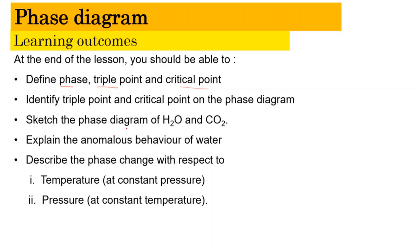We're going to sketch the phase diagram of water as well as carbon dioxide, and explain the anomalous behavior of water on the phase diagram. Last but not least, we're going to describe the phase changes with respect to temperature, where the change in temperature occurs at constant pressure — that is an isobaric condition.